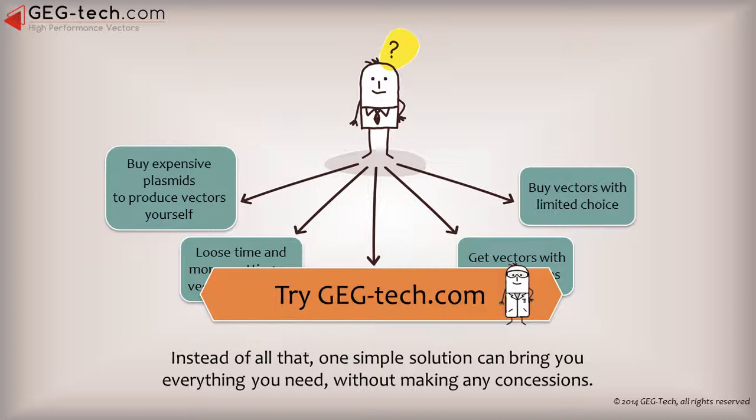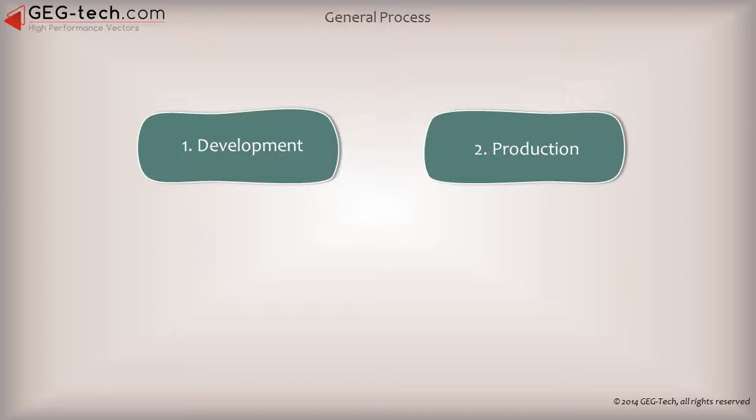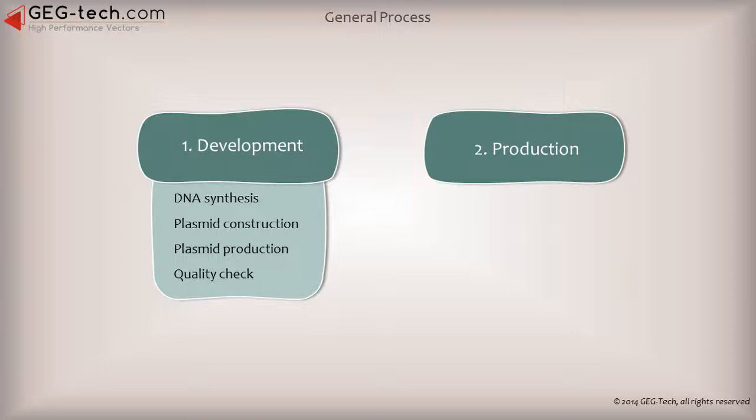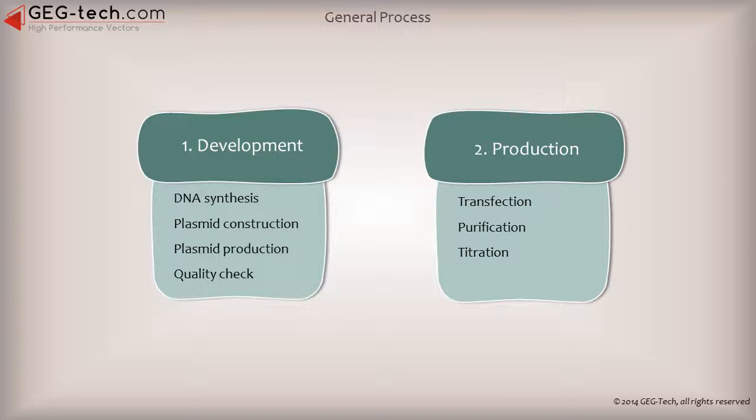Here is the way we proceed at GEG Tech. The general process is divided into two phases. First, the development includes the different steps of plasmid making: DNA synthesis, plasmid construction and production, and quality check. Then, the production phase is the vector making, with transfection, purification, and titration steps. All these steps will be detailed.